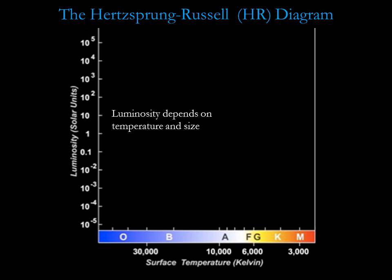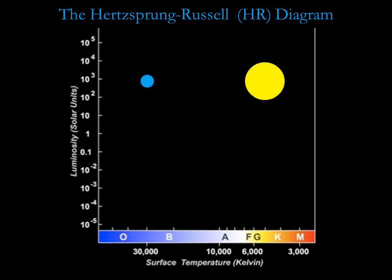An HR diagram also provides information about stellar radii. Remember, a star's luminosity depends on both surface temperature and surface area. For two stars to have the same surface temperature, one can be more luminous than the other only if it is larger in size. For two stars with different temperatures to have the same luminosity, the cooler star must be larger to keep up with the luminosity of the hotter star.